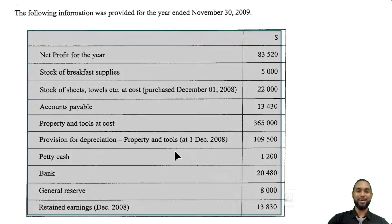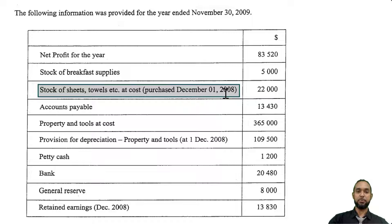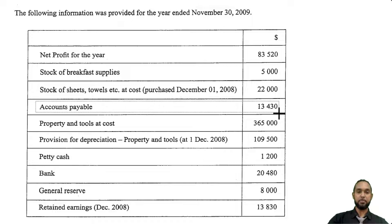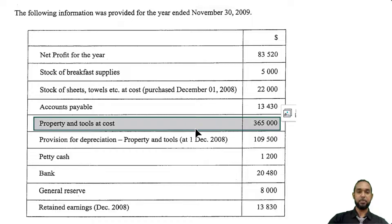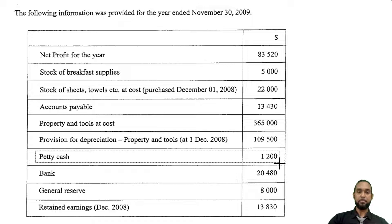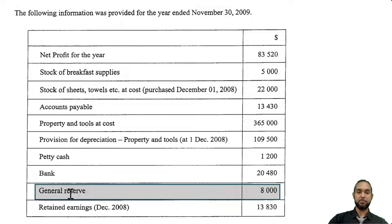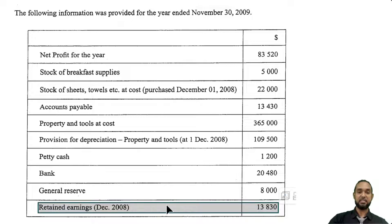They give us a table here. We have net profit for the year: $83,520. Stock of breakfast supplies: $5,000. Stock of sheets, towels, etc. at cost purchased December 1st, 2008 — that's the start of the year, since the year ends November 30th, 2009, so December 1st, 2008 is exactly one year before — that stock is $22,000. Accounts payable: $13,430. Property and tools at cost: $365,000. Depreciation on property and tools at the start of the year: $109,500. Petty cash: $1,200. Bank: $20,480. General reserve: $8,000 as the current balance. And retained earnings at the start of the year: $13,813.